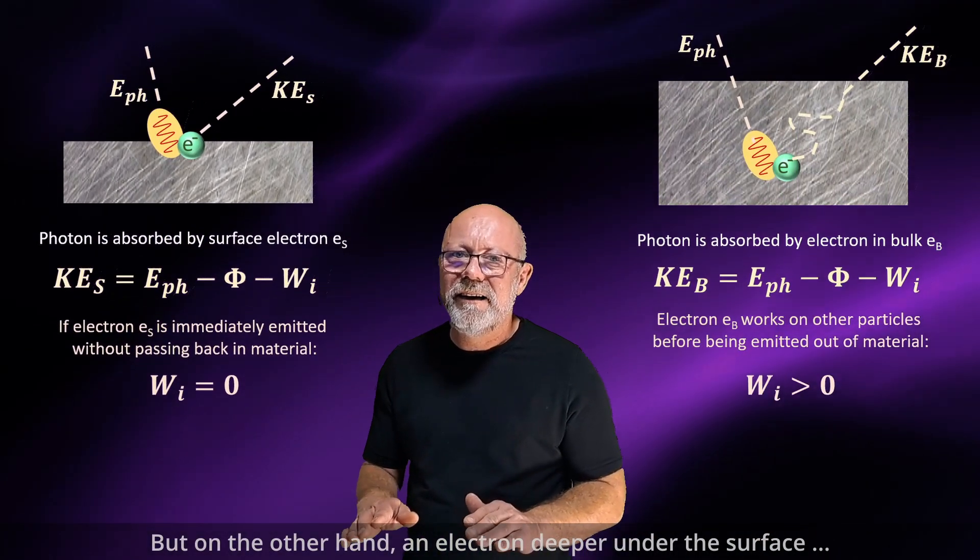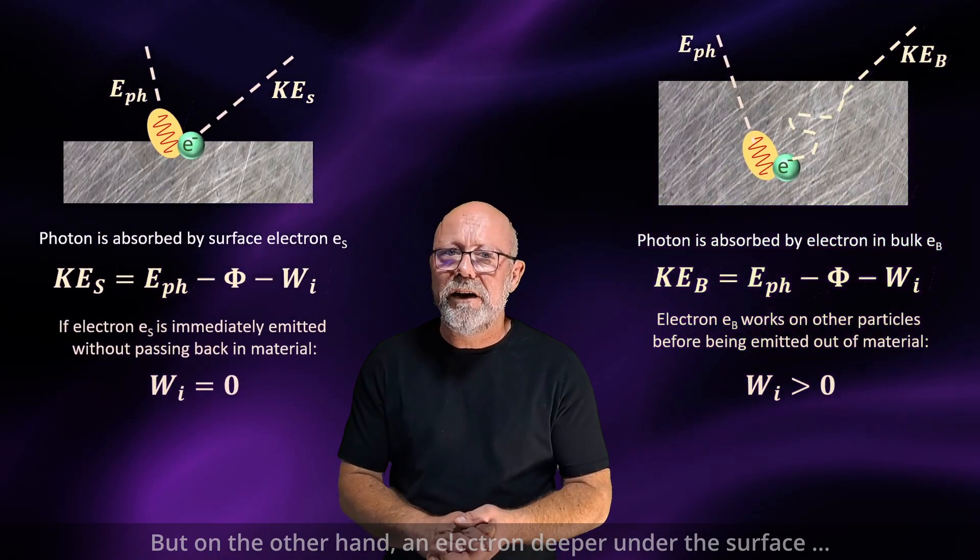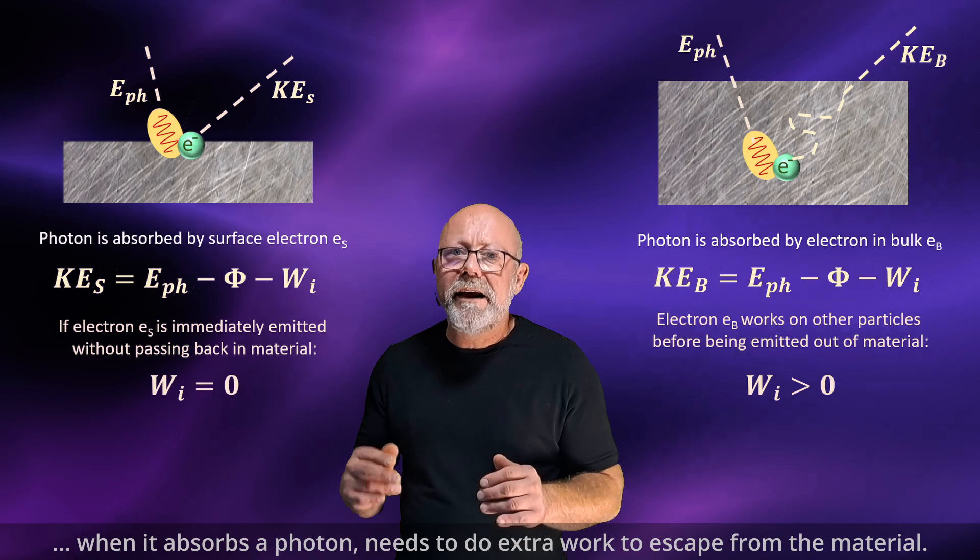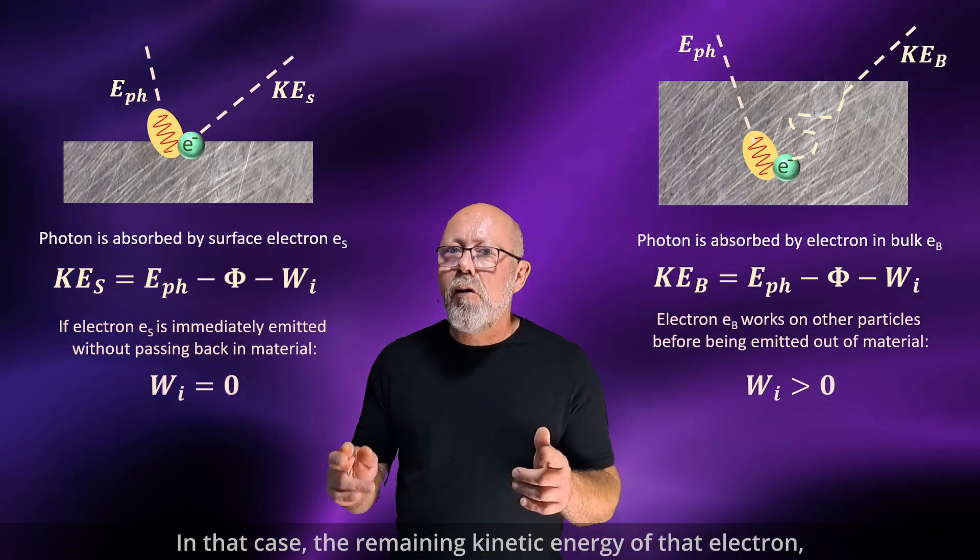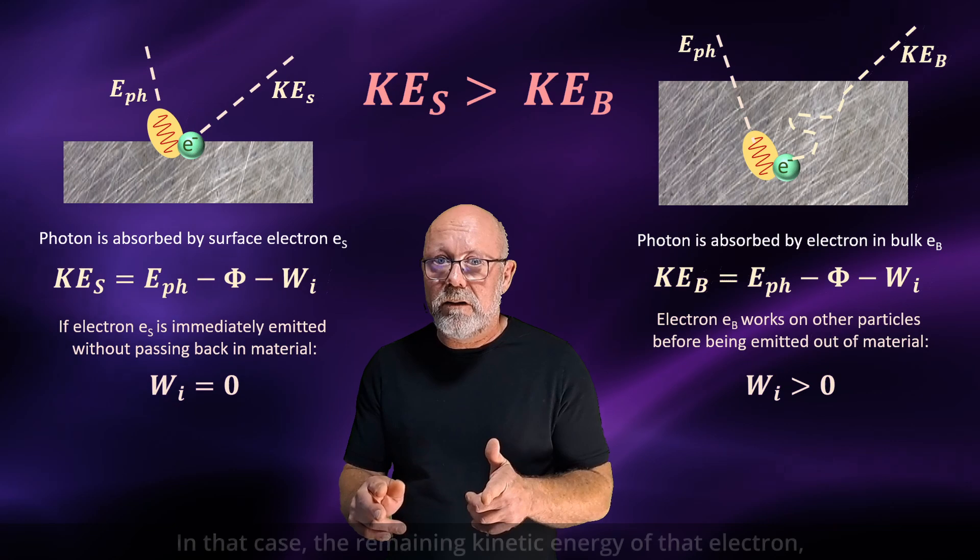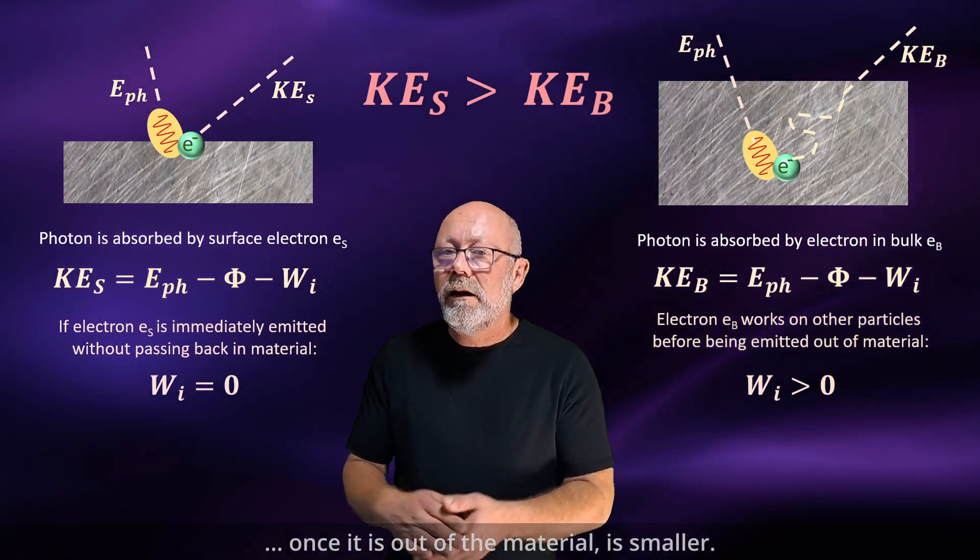But, on the other hand, an electron deeper under the surface, when it absorbs a photon, needs to do extra work to escape from the material. In that case, the remaining kinetic energy of that electron, once it is out of the material, is smaller.